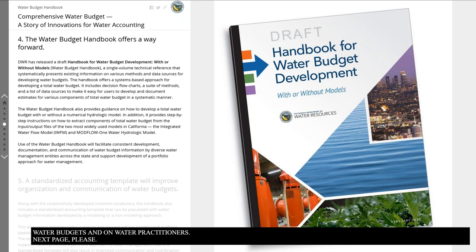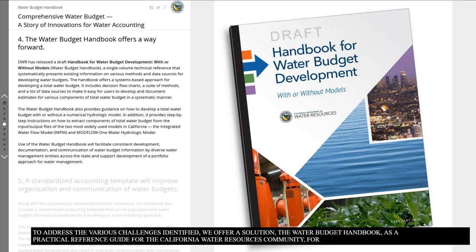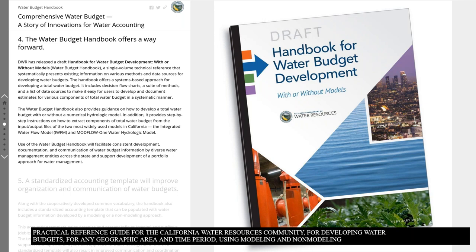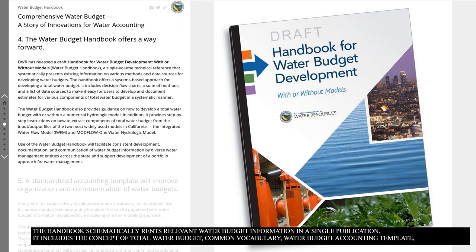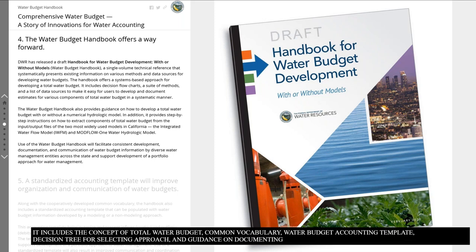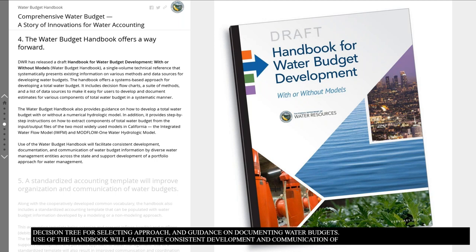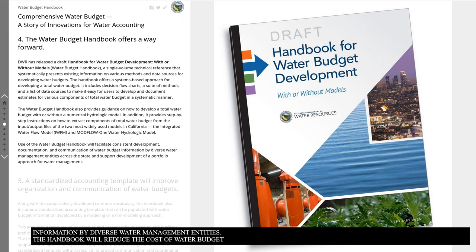To address the various challenges identified, we offer a solution — the Water Budget Handbook — as a practical reference guide for the California Water Resources Community for developing water budgets for any geographic area and time period using modeling and non-modeling approaches. The handbook systematically represents relevant water budget information in a single publication. It includes the concept of total water budget, common vocabulary, water budget accounting template, decision tree for selecting an approach, and guidance on documenting water budgets. Use of the handbook will facilitate consistent development and communication of water budget information and will reduce the cost of water budget development and documentation for local and regional agencies.